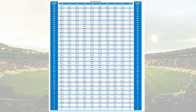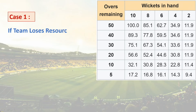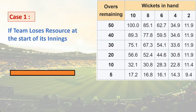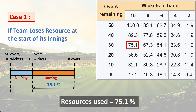Consider three cases for calculating resource percentage used by a team. In Case 1 — resource loss at the start of innings — if an interruption reduces the innings to 30 overs before batting begins, the resource available at the start of batting is the percentage corresponding to 30 overs and 10 wickets in the table, which is 75.1%. Since there is no further interruption, the total resources used by the team become 75.1%.